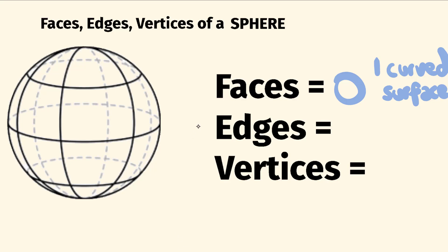All right, on to the number of edges. The number of edges is where a shape's faces meet. And as you can see, we have no faces here. So a sphere has zero edges — it doesn't have any edges, and there's no surprise there.